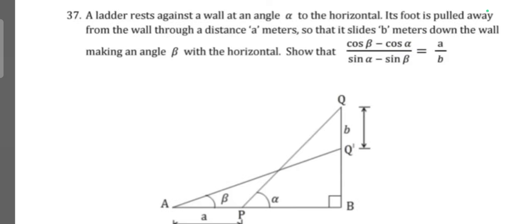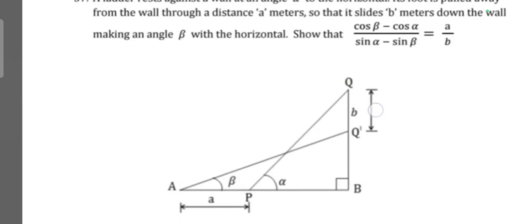A ladder rests against a wall at an angle alpha to the horizontal. Its foot is pulled away from the wall to a distance a meters so that it slides b meters down the wall, making an angle beta with the horizontal. Show that cos beta minus cos alpha divided by sine alpha minus sine beta is equal to a by b. Important question, this one.